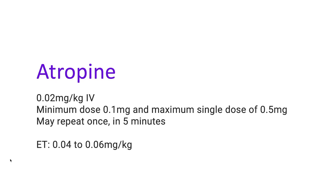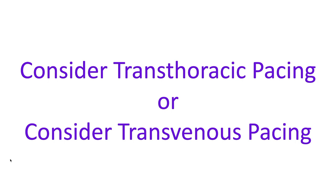Because the absorption of atropine given by the ET route is unreliable, a larger dose — typically 2 to 3 times that of the IV dose — may be required. Atropine and pacing are preferred over epinephrine as the first choice treatment of symptomatic AV blocks due to primary bradycardia. Temporary transthoracic or transvenous pacing may be life-saving in selected cases of bradycardia caused by complete heart blocks or abnormal sinus node function.